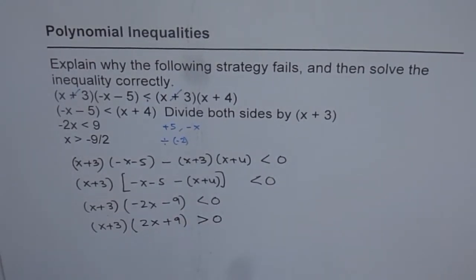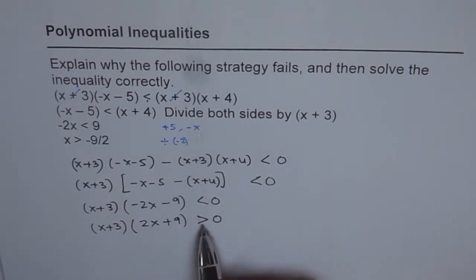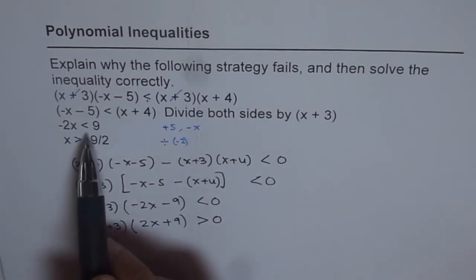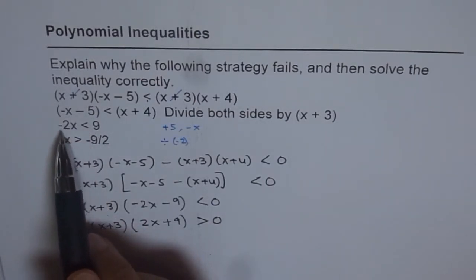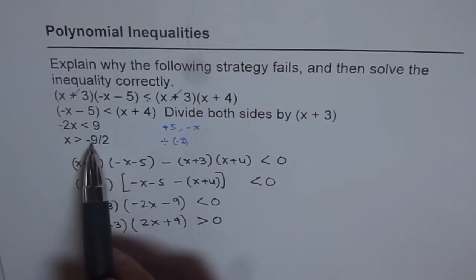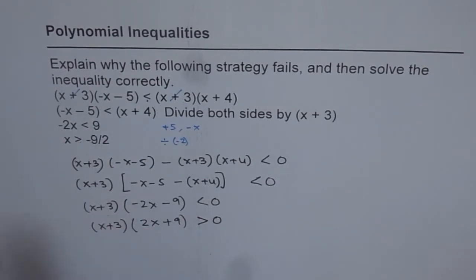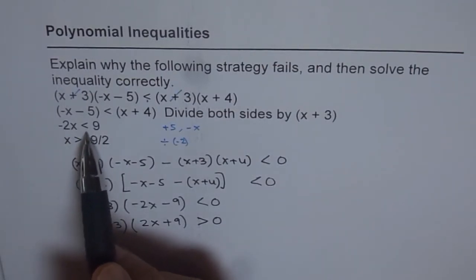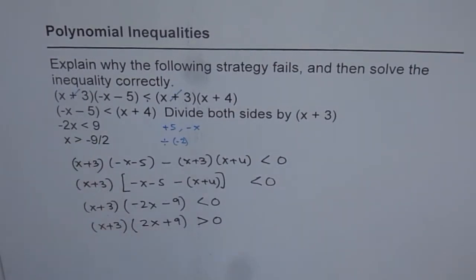So whenever you multiply or divide by a negative number, in that case, the inequality sign changes along with all of the signs. Like here, this was the correct step. When you divide by minus 2, it becomes minus 9 over 2 and the sign changes. So this is the correct step here. At times, in question papers, there will be a mistake here also. So be careful at this stage.